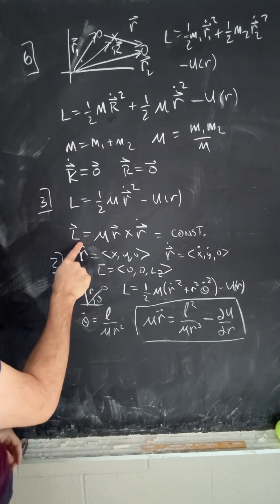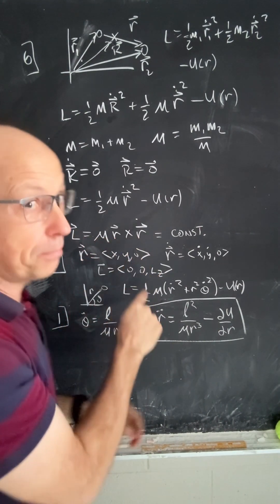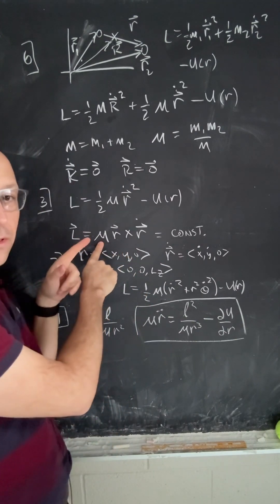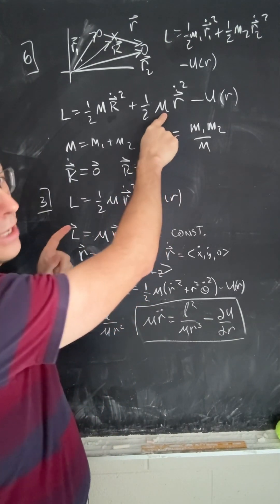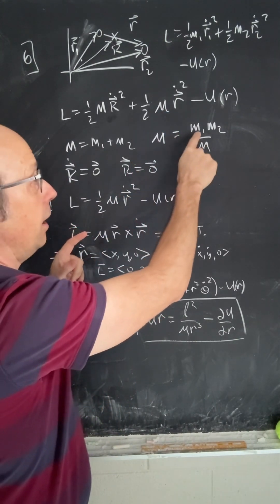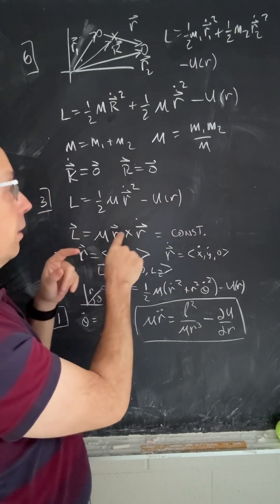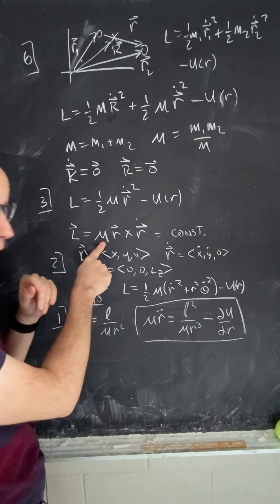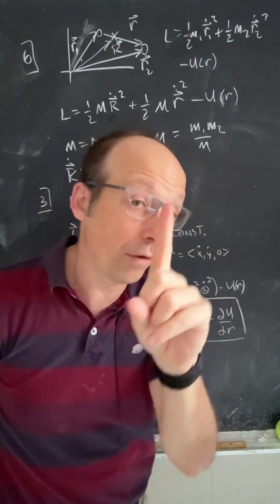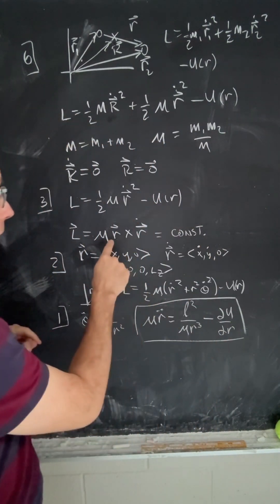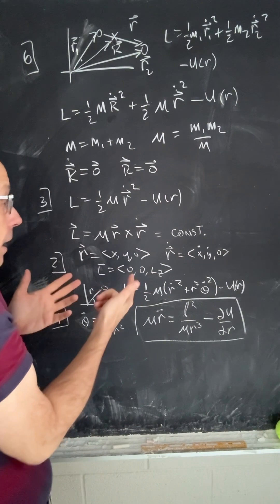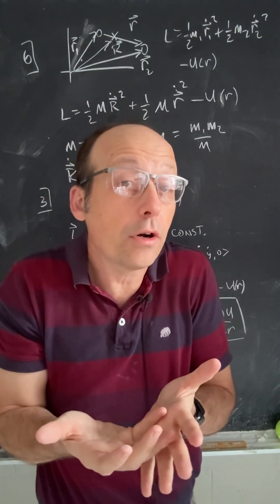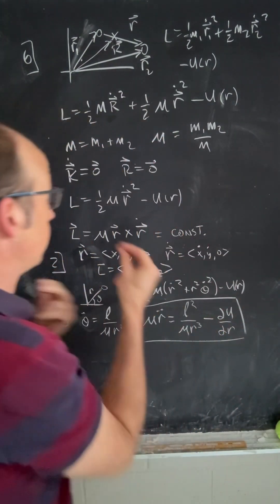After that, what we do is say angular momentum is R cross P. We're using the reduced mass here that you get out of the algebra, M1, M2 over total M. So the angular momentum can be written as this for that one equivalent particle, the reduced mass, where that's R dot, but it's constant because there's no torque on the system.